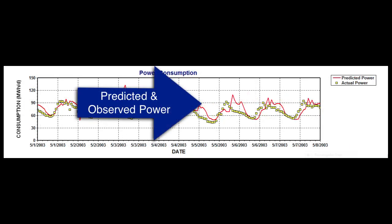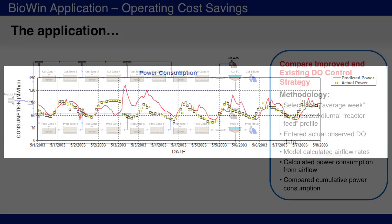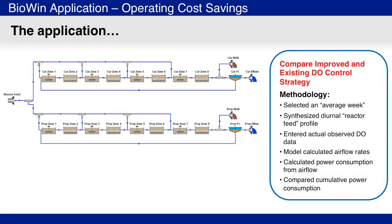The plant also had information on power consumption as a function of air flow, so it was possible to compare predicted versus observed power consumption. Once the model was calibrated and predictive of the plant behavior, it was applied to investigate the alternative dissolved oxygen control strategy. To facilitate comparisons between the current and proposed control modes, the following approach was used.